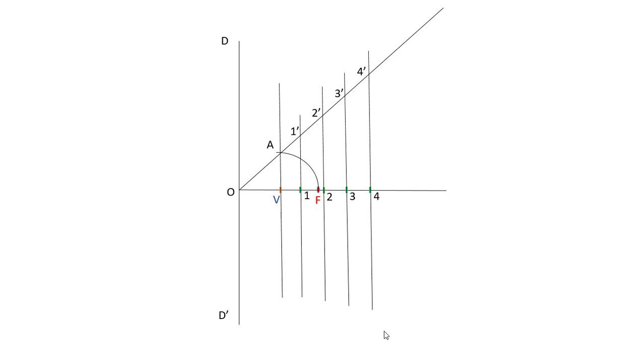So here, we will take the distance 1 to 1' in a compass. F will be the center and then we will cut an arc on a line which is passing through 1, 1' obviously at the top side as well as at the bottom side.